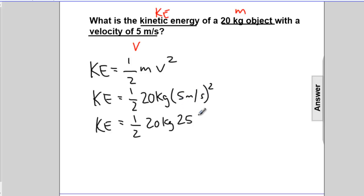We square not only the number but also the units. Meters per second times meters per second equals meters squared per second squared.